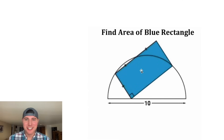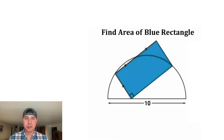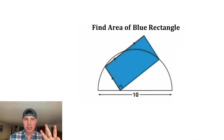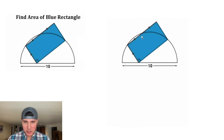Hey guys, this looks like a fun one. It says find the area of the blue rectangle, and the rectangle is twice as wide as it is tall. It hits the semicircle in these various places. If you guys want to try this on your own, pause it right now because I'm going to solve it in three, two, one.